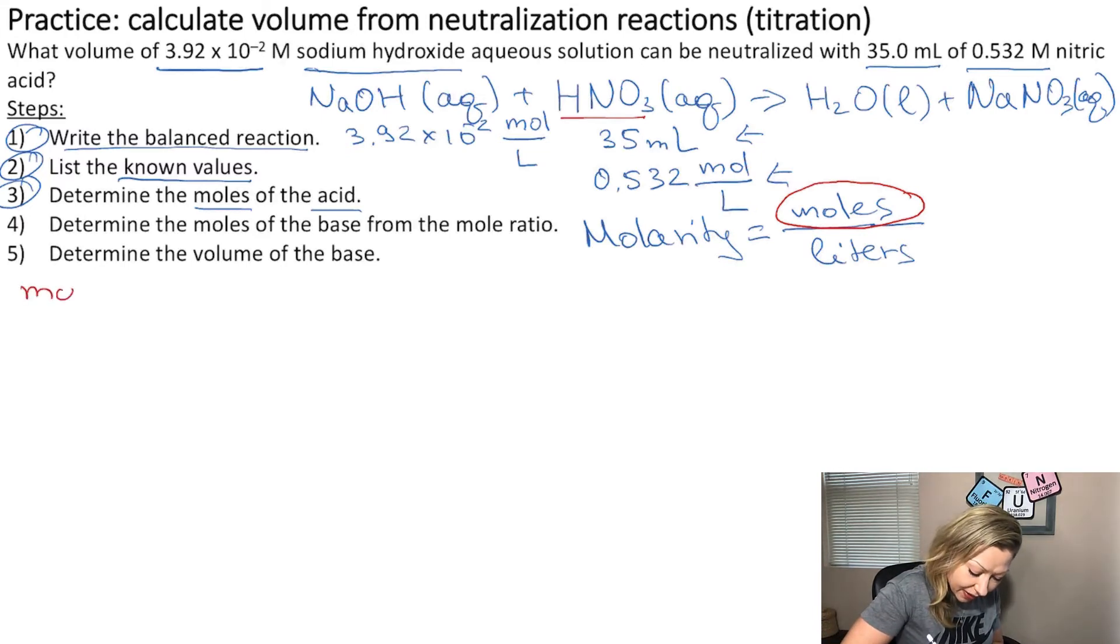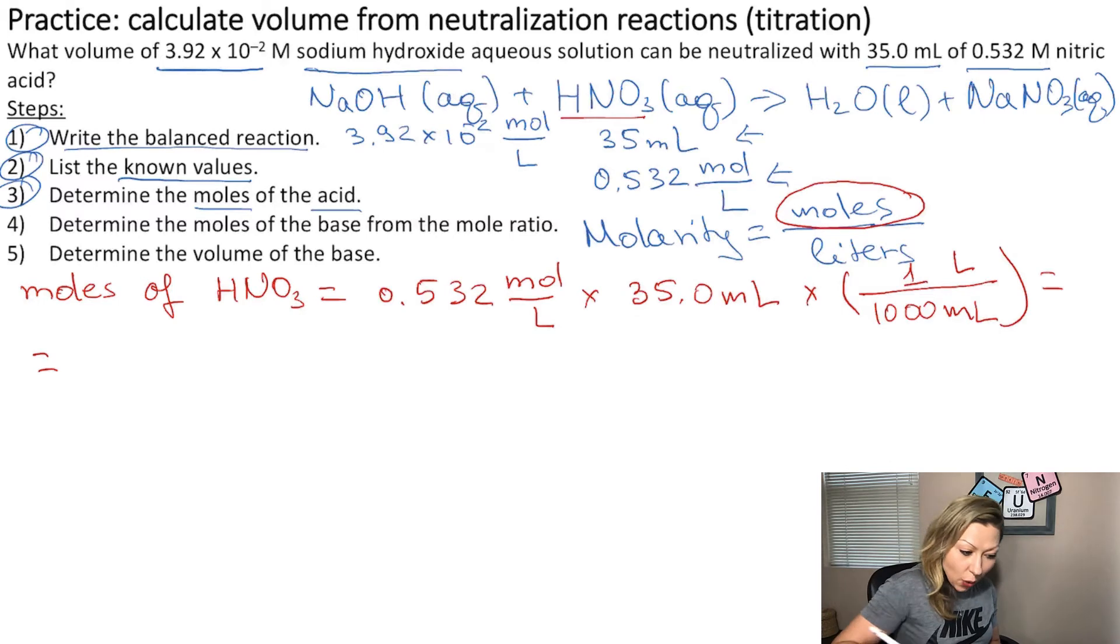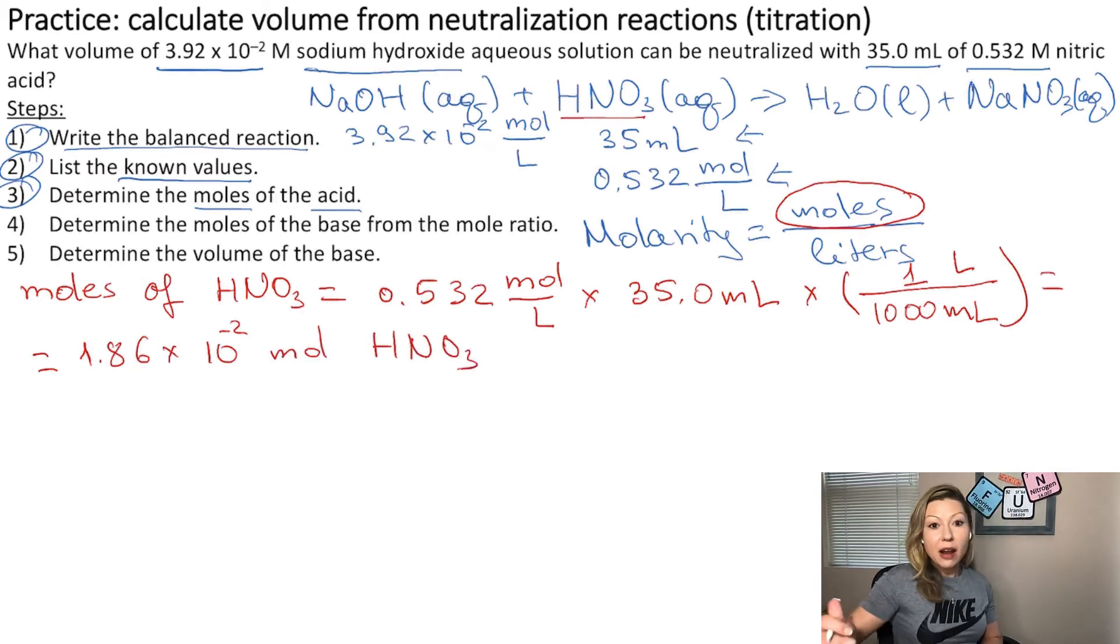So the moles of HNO3 will equal the molarity multiplied by the liters of the solution. The molarity is 0.532 mole per liter, and we have 35.0 milliliters that we can convert using our conversion factor into liters. We know that one liter is 1,000 milliliters. So if you do this calculation, you are going to get 1.86 times 10 to the negative second moles of HNO3.